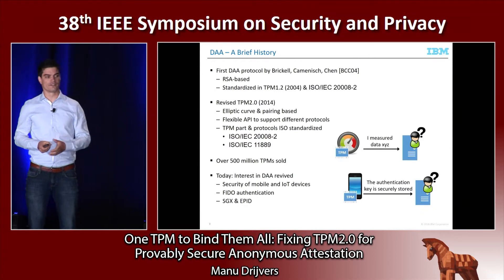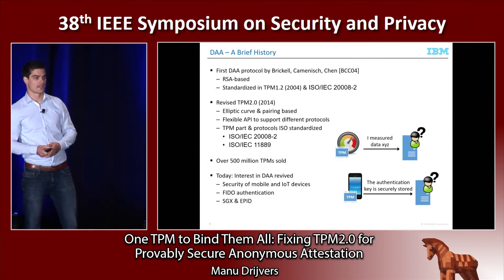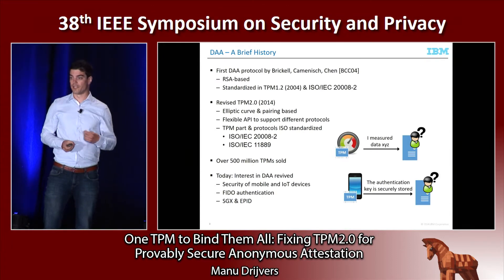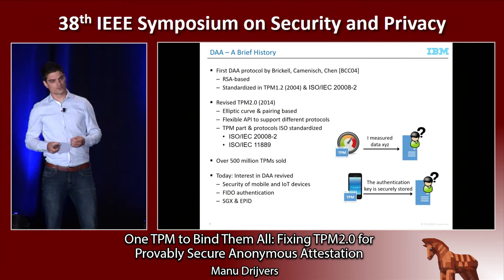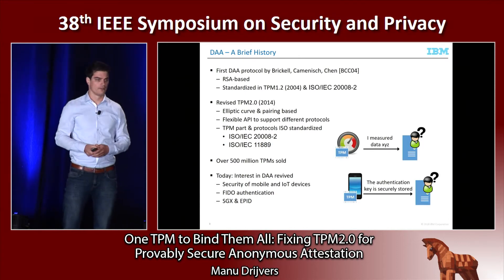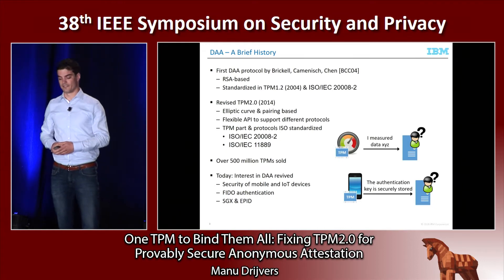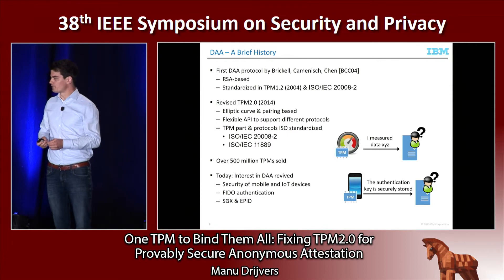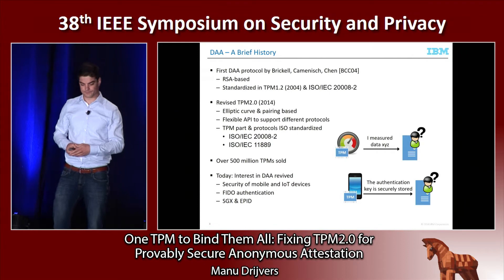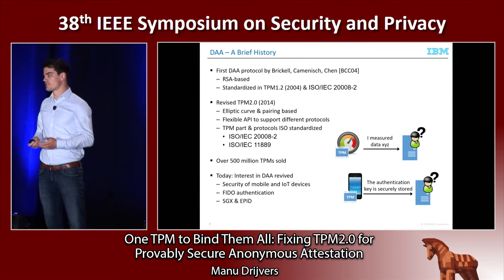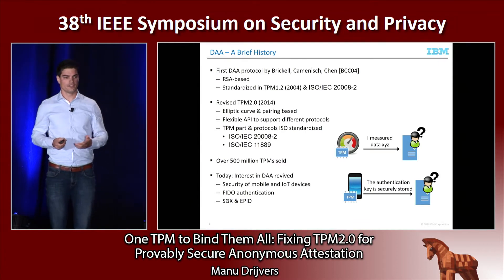As you know, RSA needs large keys to be secure. So when TPM 2.0 came around, they switched to the elliptic curve setting, in particular with bilinear pairings. They also reworked how the TPM supported anonymous attestation in a nice way — they made the TPM part of the protocol so generic that it allows for multiple different DAA protocols to be supported. All of this is standardized by ISO, and there are hundreds of millions of these TPMs being sold, so this is pretty widespread.